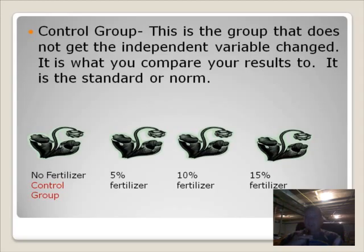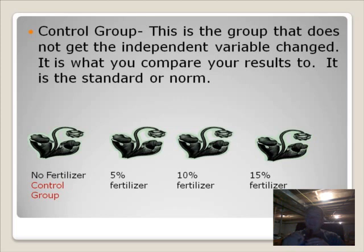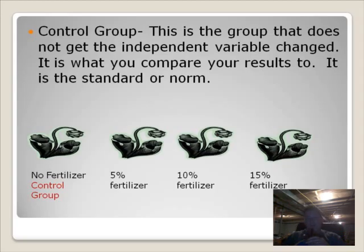For example, we have here these four plants, and I want to see which amount of fertilizer works the best. With the four plants, I give one plant no fertilizer at all. That's my control group because I want to make sure the fertilizer actually has an effect on the plants. Then one plant I will give 5% fertilizer, the next plant 10% fertilizer, and then the last plant will get 15% fertilizer.